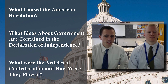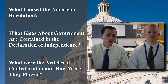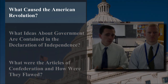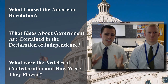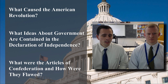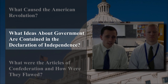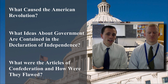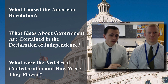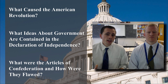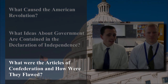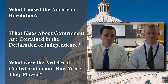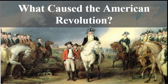In the Foundations of American Democracy unit, we have three basic questions: What caused the American Revolution? What ideas about government are contained in the Declaration of Independence? And what were the Articles of Confederation and how were they flawed? They were so flawed we decided to scrap them entirely and rewrite a new Constitution in 1787.